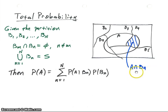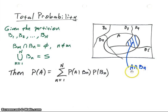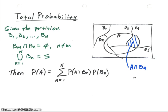A intersect B4 is just that small section shown here. The reason we look at the intersection is that the probability of A intersect B4 equals the probability of A given B4 times the probability of B4 — and that's just one of the items in the summation.